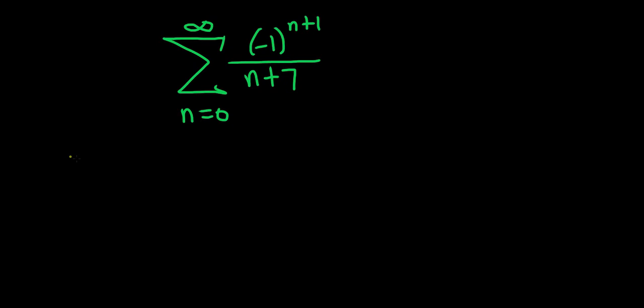To use the alternating series test, the first thing you have to do is identify your a sub n. In the alternating series test, a sub n is always the non-alternating part.